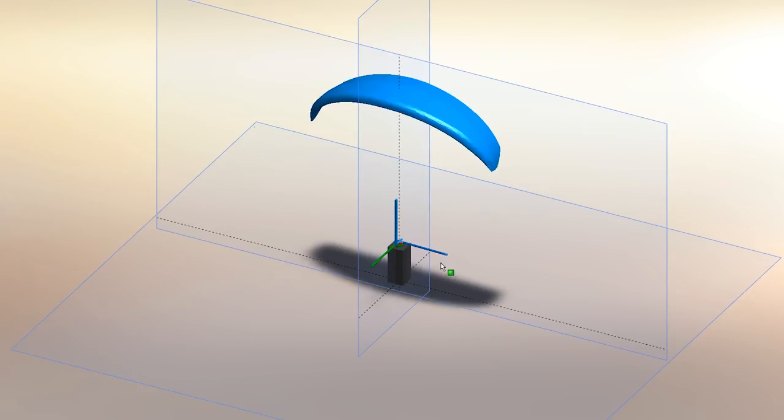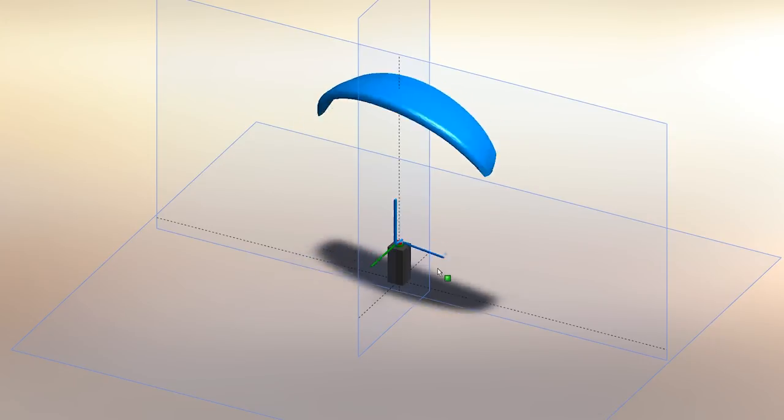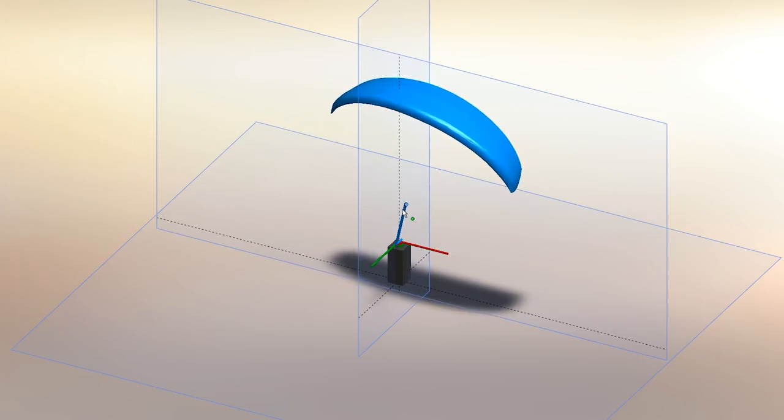When on the ground big fast inputs seem to produce a lot more yaw than roll and small steady inputs produce more roll than yaw over time.